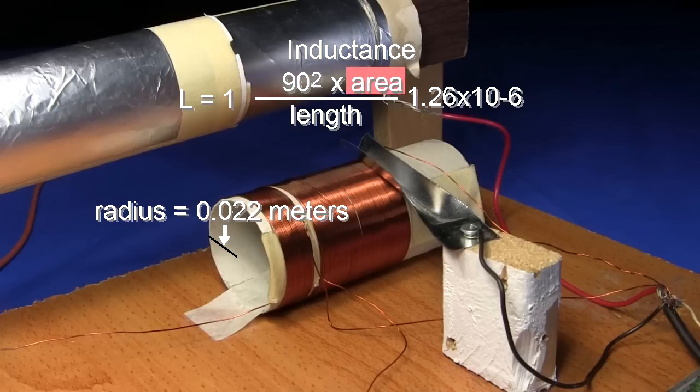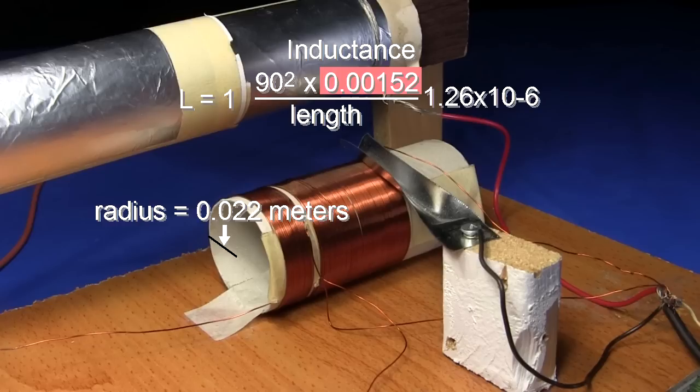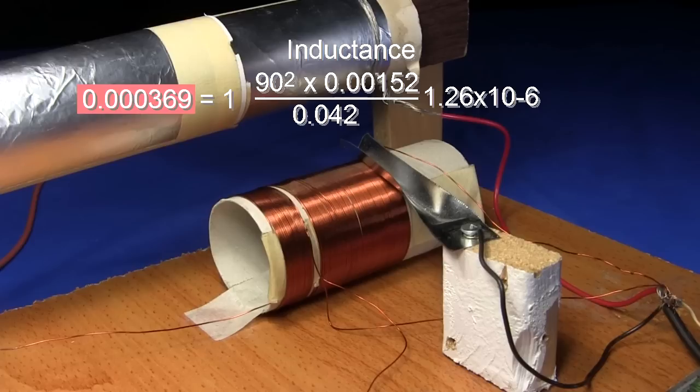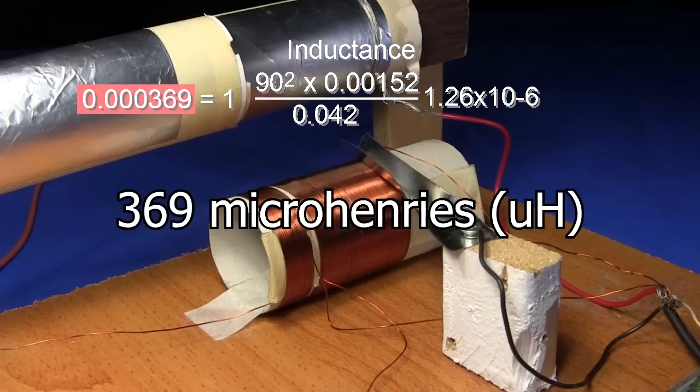And using the formula for the area which I showed you earlier, that's an area of 0.00152 square meters. The length is 0.042 meters. Calculating it out, we get 369 microhenries.